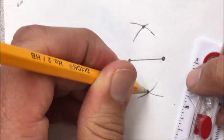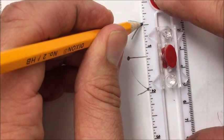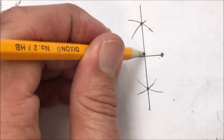What that gives me is these two points—these two intersections. Now if I draw a line that goes through them, I get a perpendicular bisector.